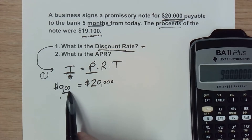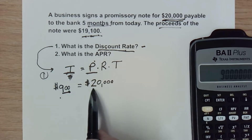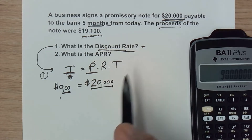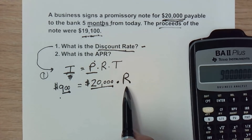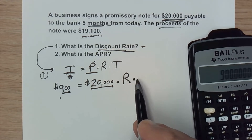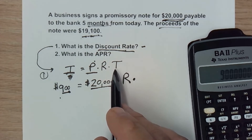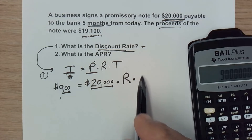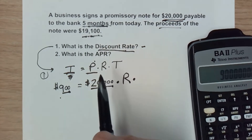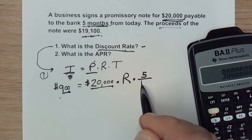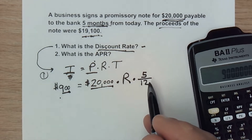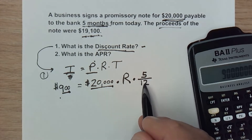To recap: $900 is the interest, $20,000 is the face value of the note — the principal — times the rate (which we're solving for, expressed as a decimal), times time. For simple interest, time is in years. We don't have a full year; we have five months. So we use the fraction five-twelfths — five months out of 12. If it were one full year we'd put one, or three years we'd put three, but here it's five-twelfths.